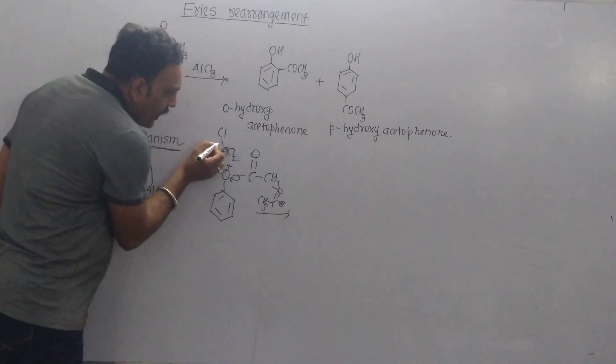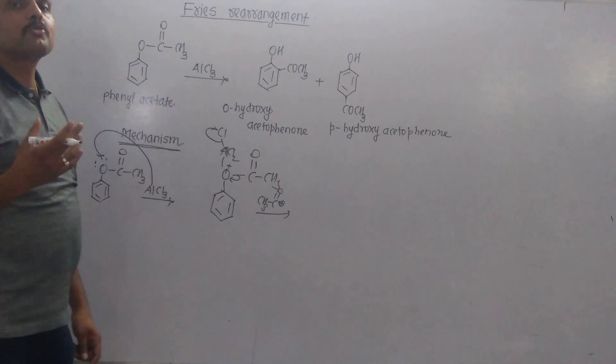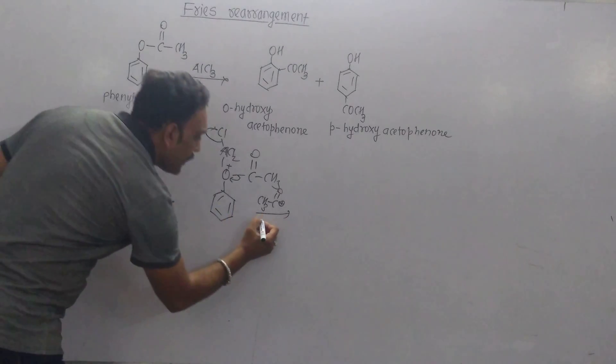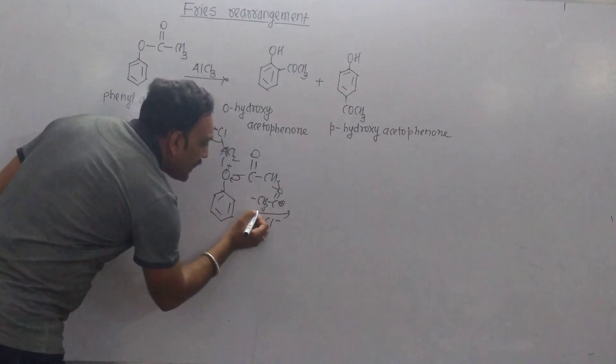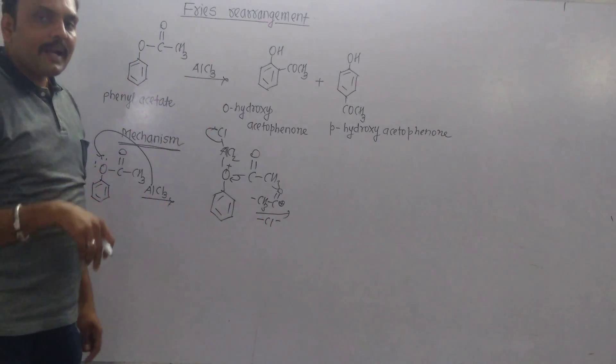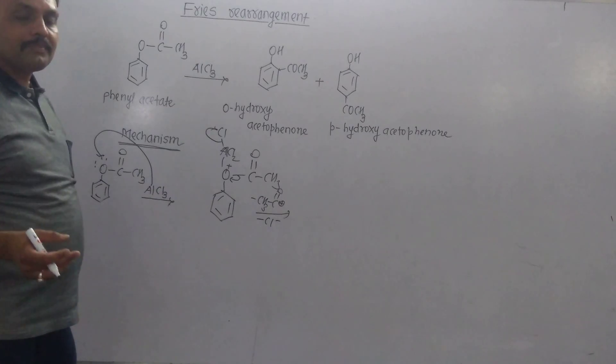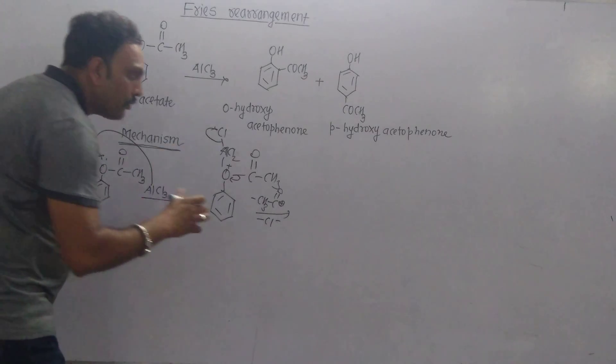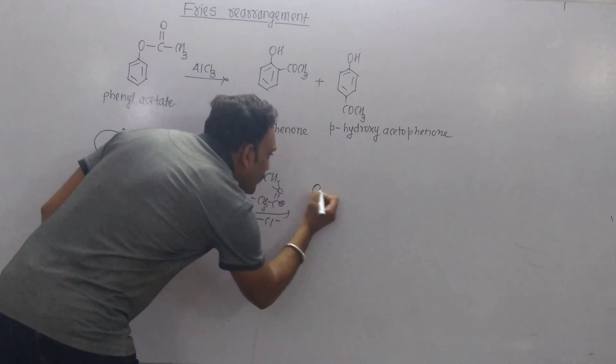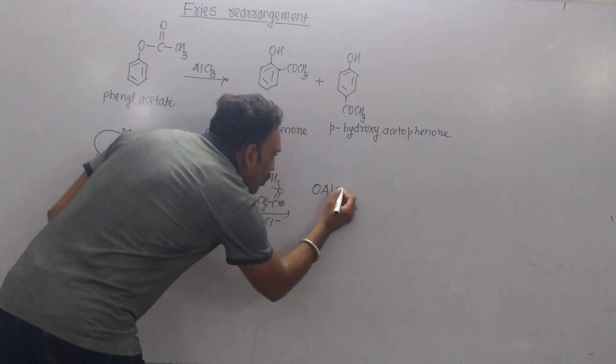On the other hand, the acetylium ion and chloride ion simultaneously depart. Due to this, an intermediate is obtained which can be represented as shown.